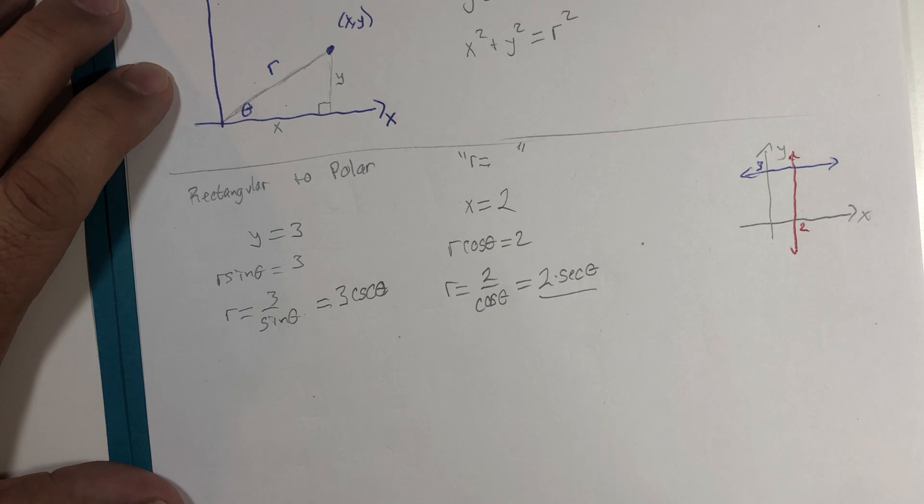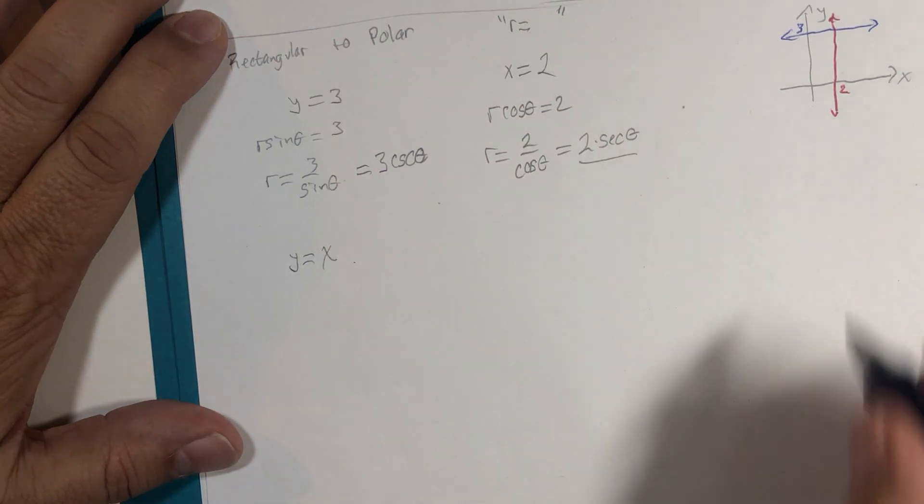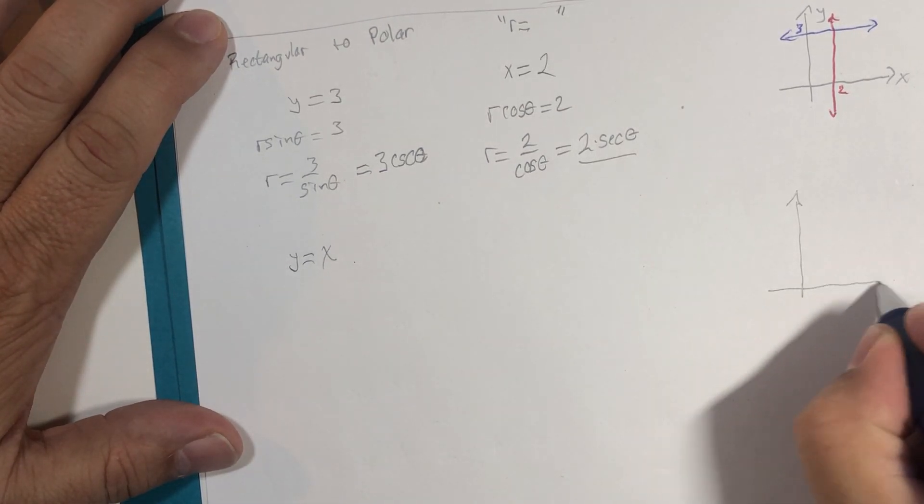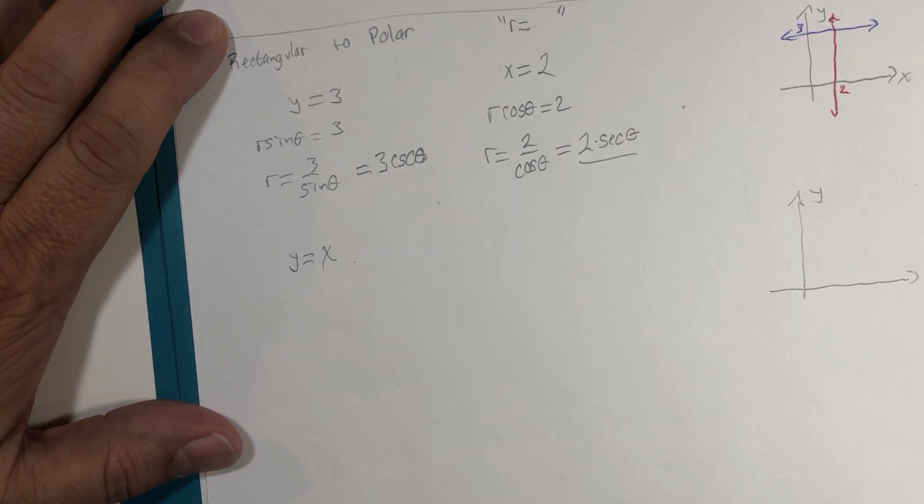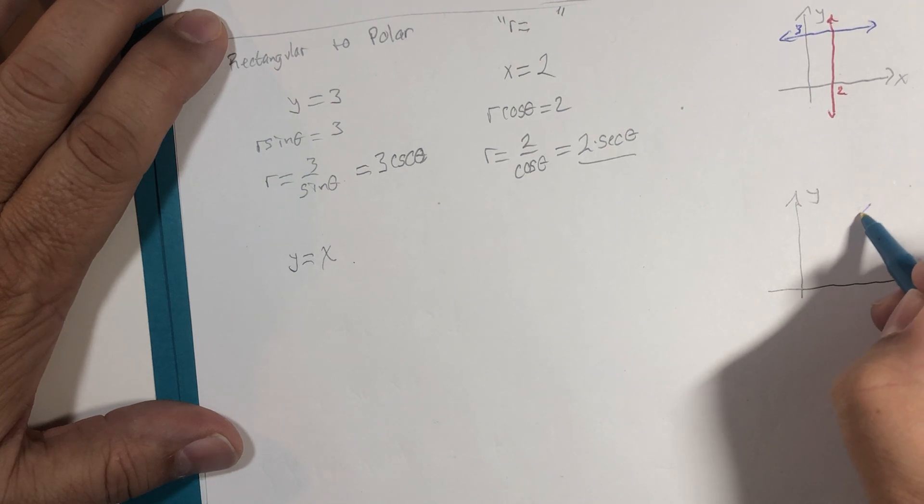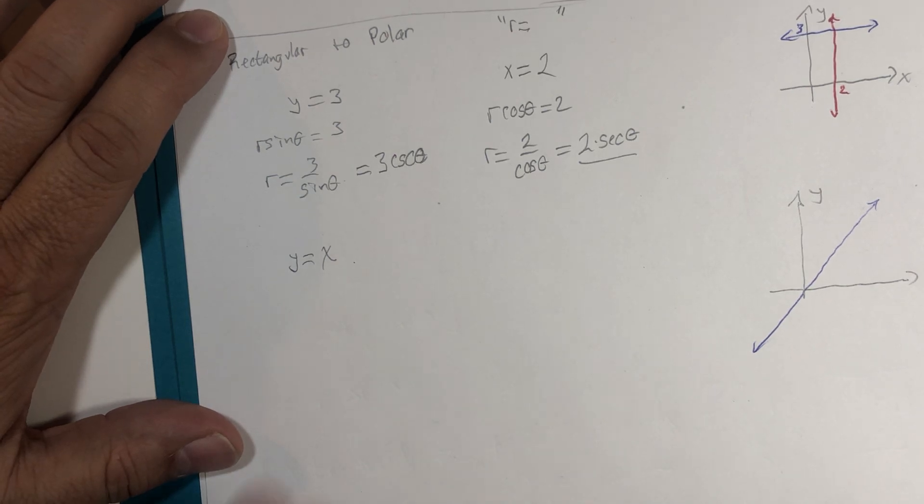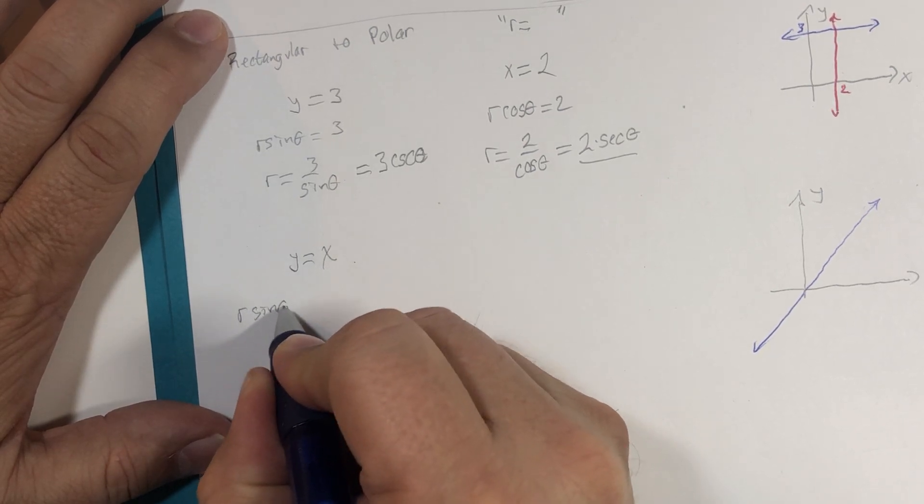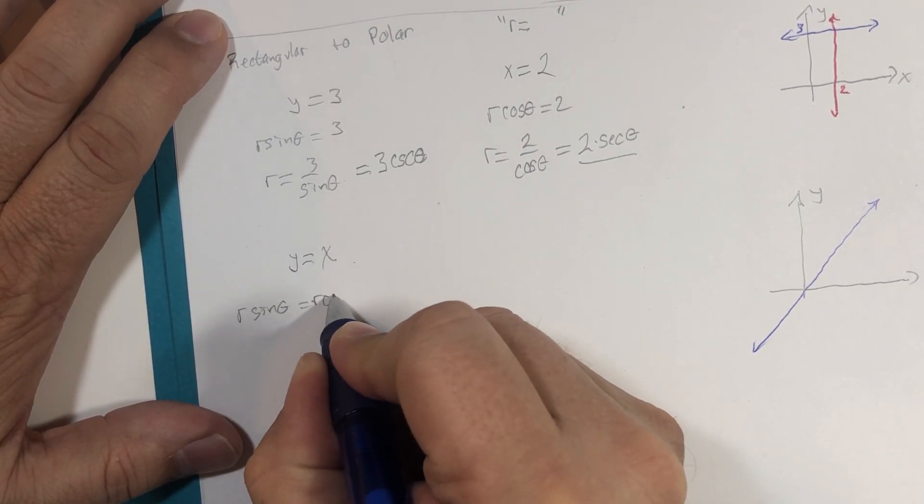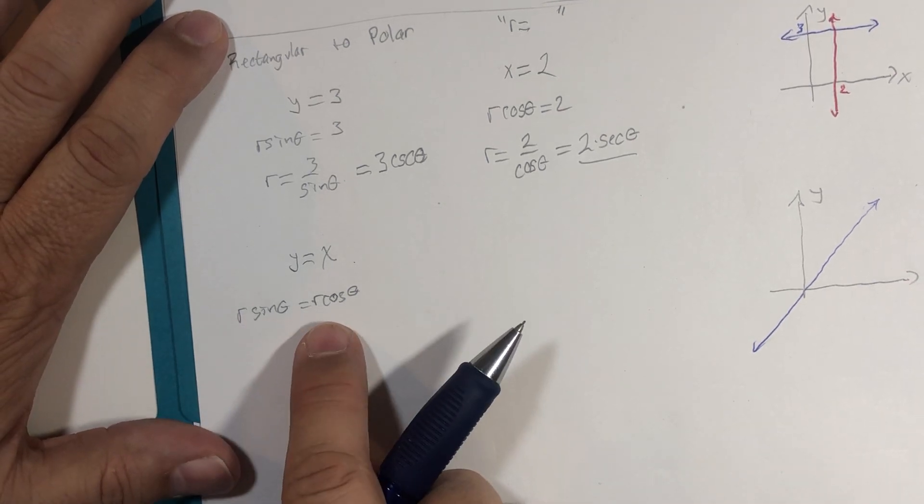So those are two pretty simple lines. Now, let's do a more interesting line. y equals x. If we attempt to use the same conversion formulas, r sine of theta is equal to r cosine of theta. We could do several pitfalls here, but let me show you a common pitfall. If I divide both sides by r, I get sine of theta equals cosine of theta.